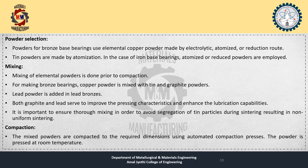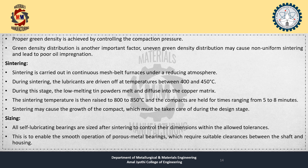Compaction: The mixed powders are then compacted to the required dimension using an automated compaction process. The powder is pressed at room temperature. Proper green density is achieved by controlling the compaction pressure. Green density distribution is another important factor — uneven green density distribution may cause non-uniform sintering and lead to poor oil impregnation.